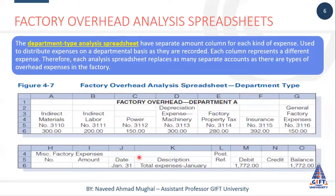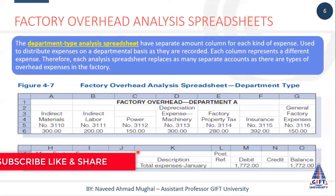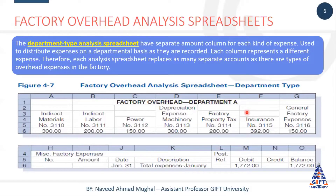In this way we can have a sheet of factory overhead department wise. Department A, department B, department C, department D - jo hai woh hum log sare ke sare is tarah se banate hain. Aur jabhi bhi hamare paas koi bhi expense aata hai, toh hum log us ka ek column create kar lete hain. Jo most frequent hote hain un ke hum log permanent columns bana lete hain, aur agar koi occasional expense hota hai toh usko hum log general factory expenses ke andar shamil karte jaate hain.